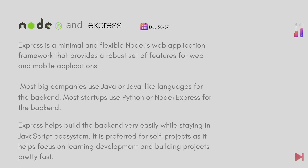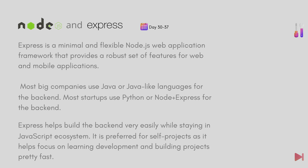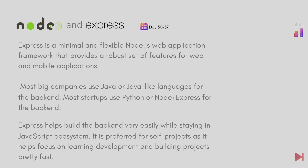For the next seven days, learn Node.js and Express. Express is a lightweight and flexible Node.js web framework that provides a robust set of features for building web and mobile applications. Many large companies use Java or Java-like languages for their backends, while smaller startups often use Python or Node.js with Express. Express makes it easy to build a robust backend while staying in the familiar JavaScript ecosystem.